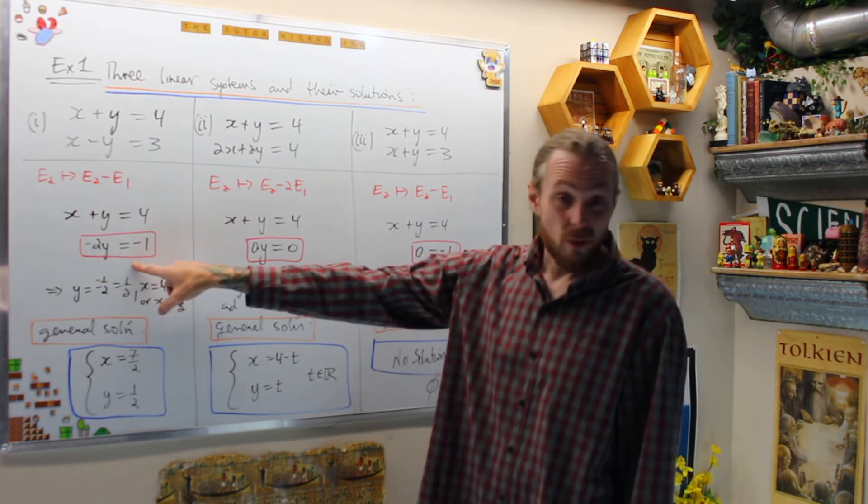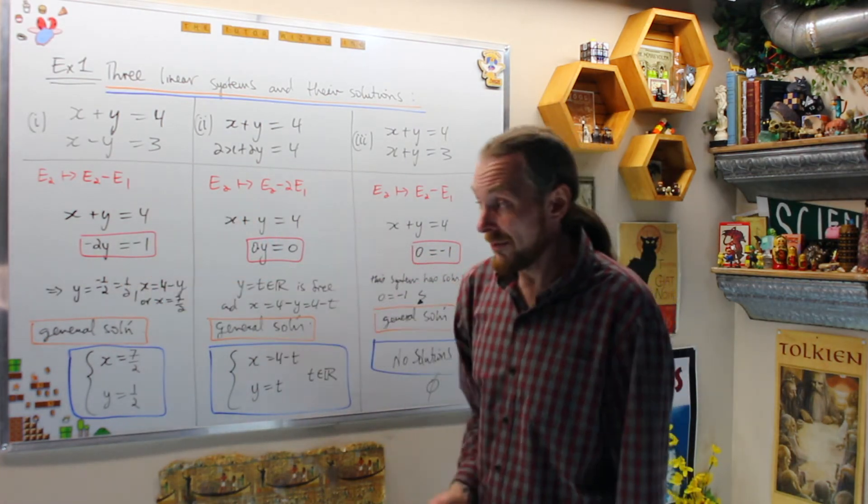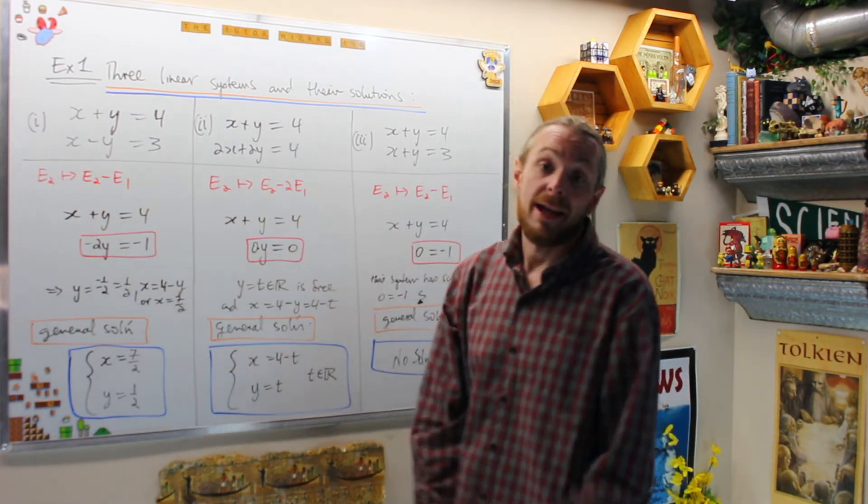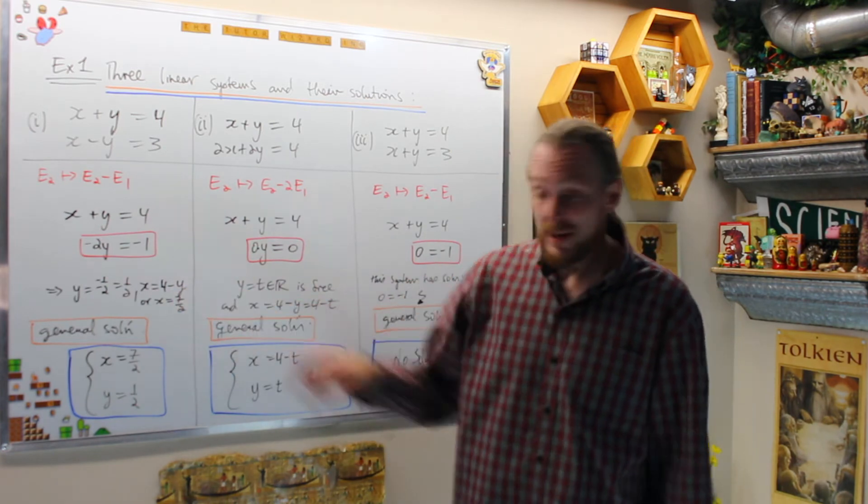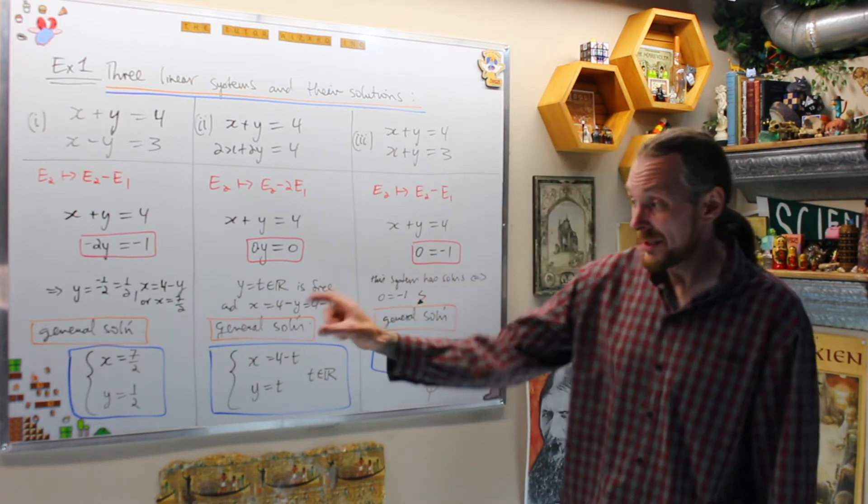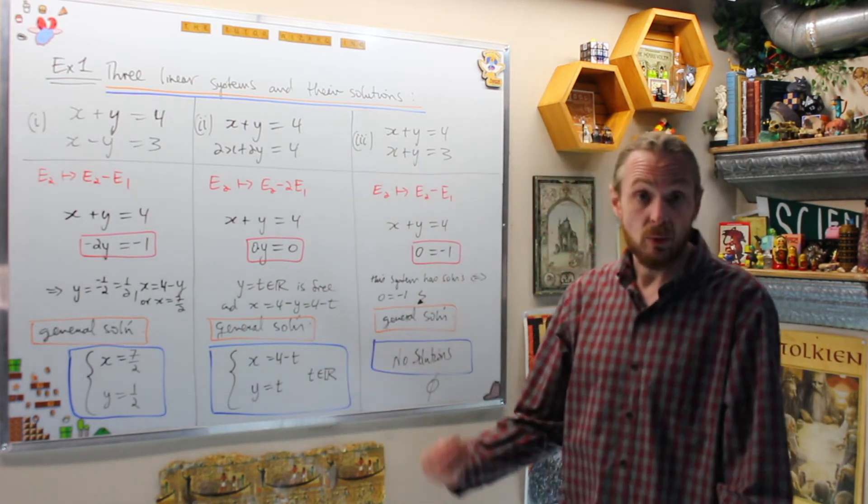I now have one equation and one unknown in the last equation, and I can solve for y, which is one half. Then because I know what y is, one half, I can put it in here and I find that x is four minus one half, which is seven halves. That means I have the general solution is the unique solution: x is seven halves and y is one half.